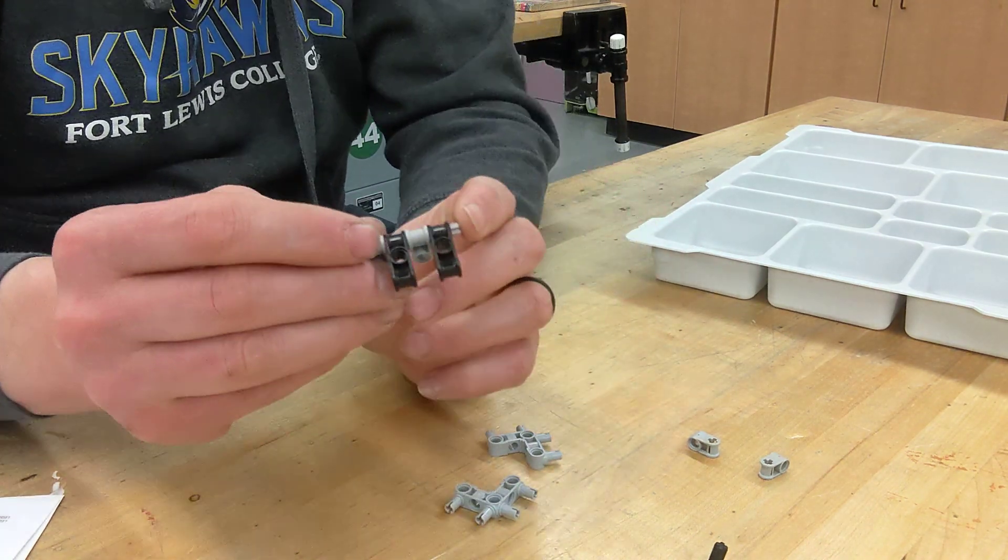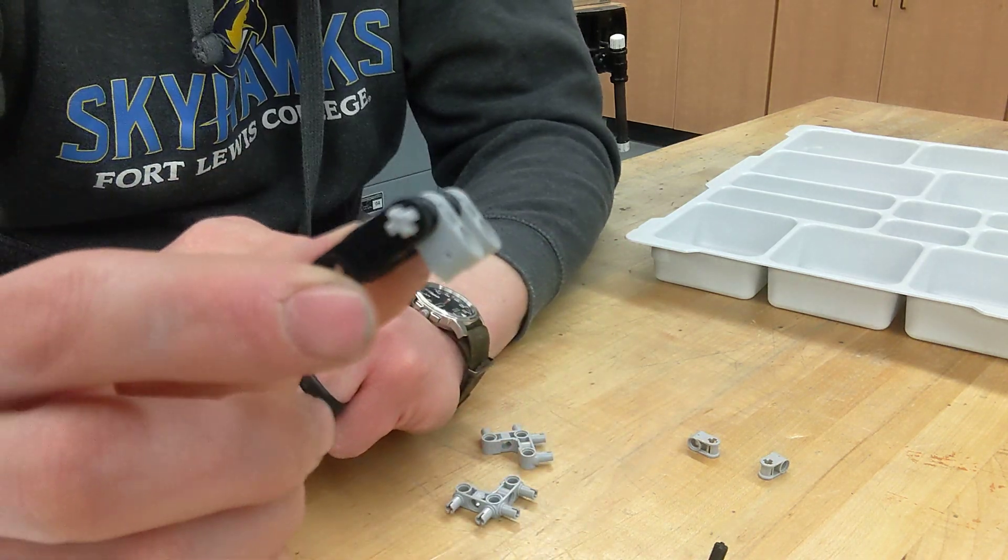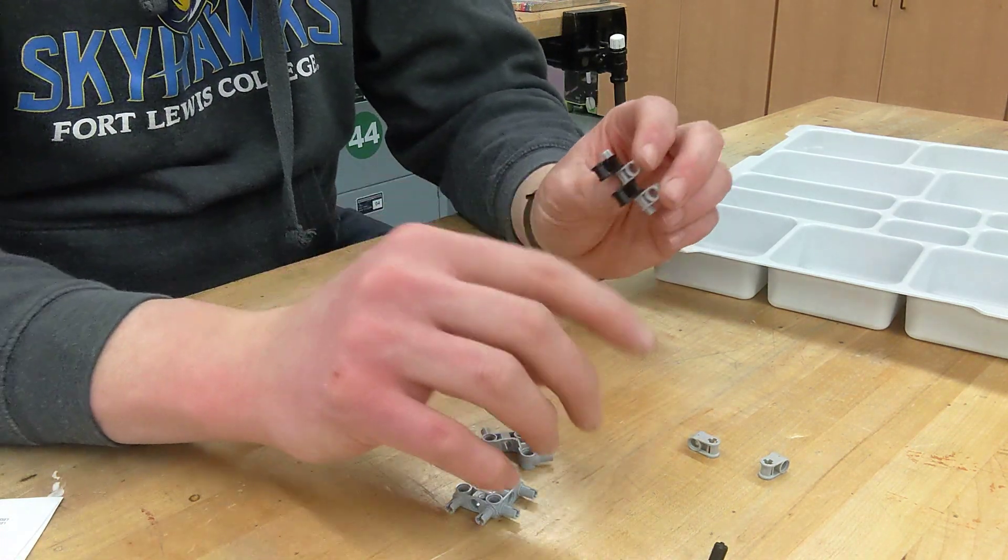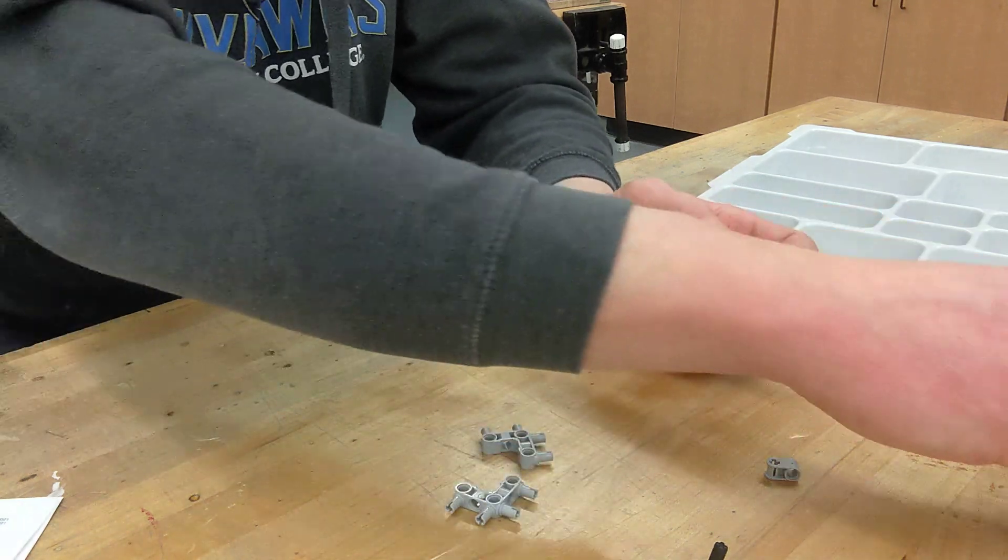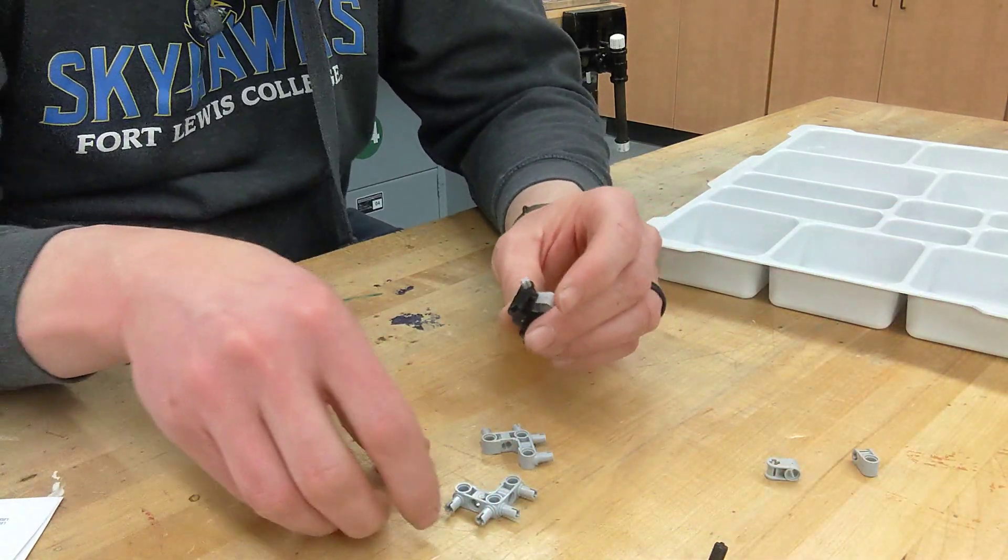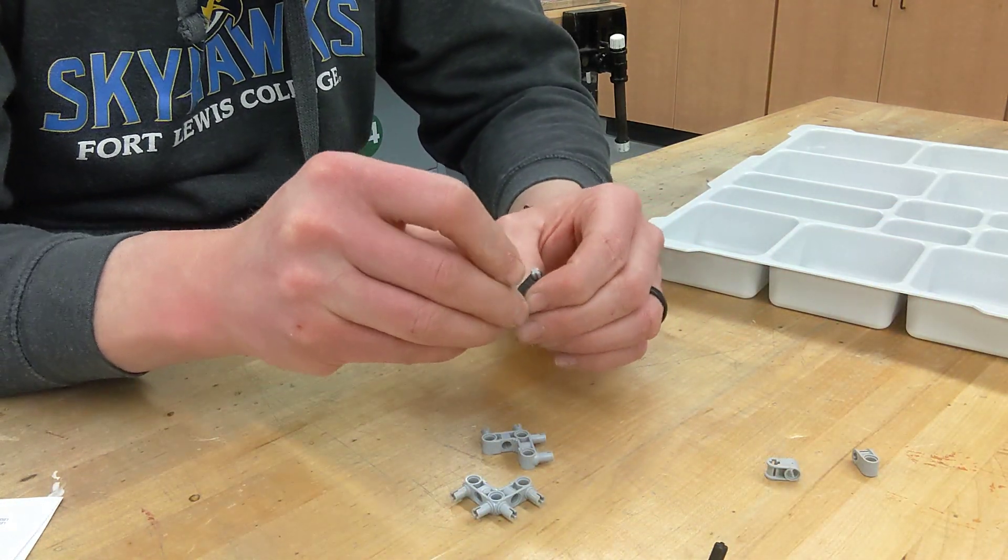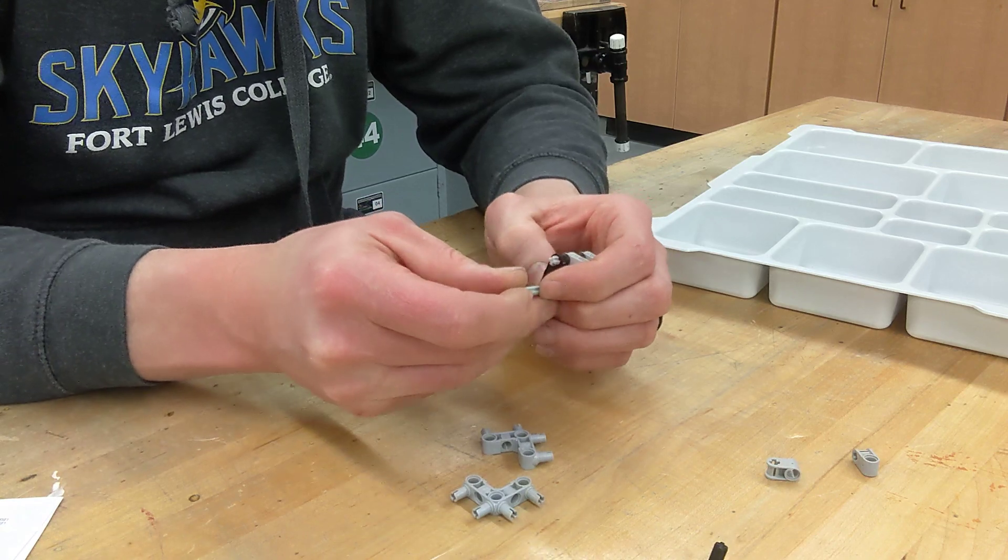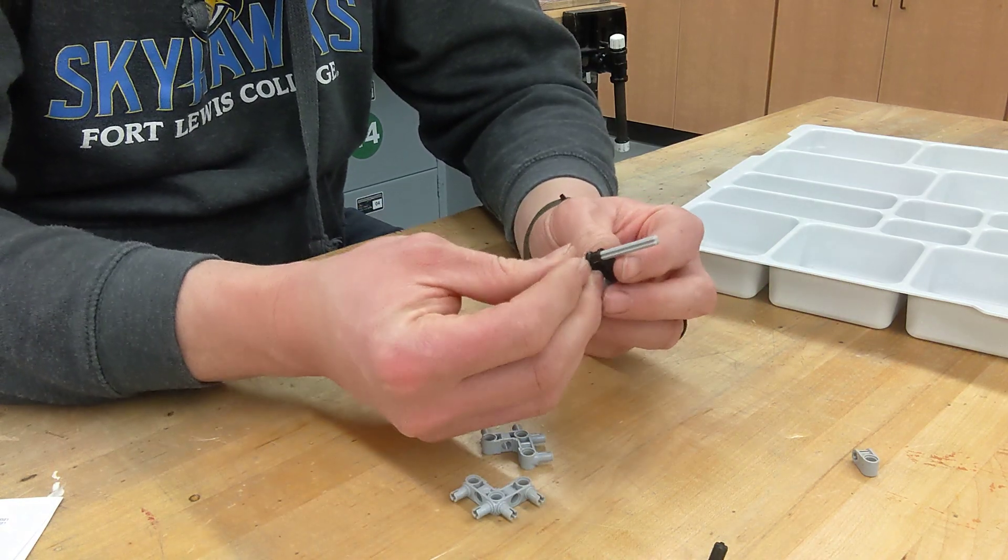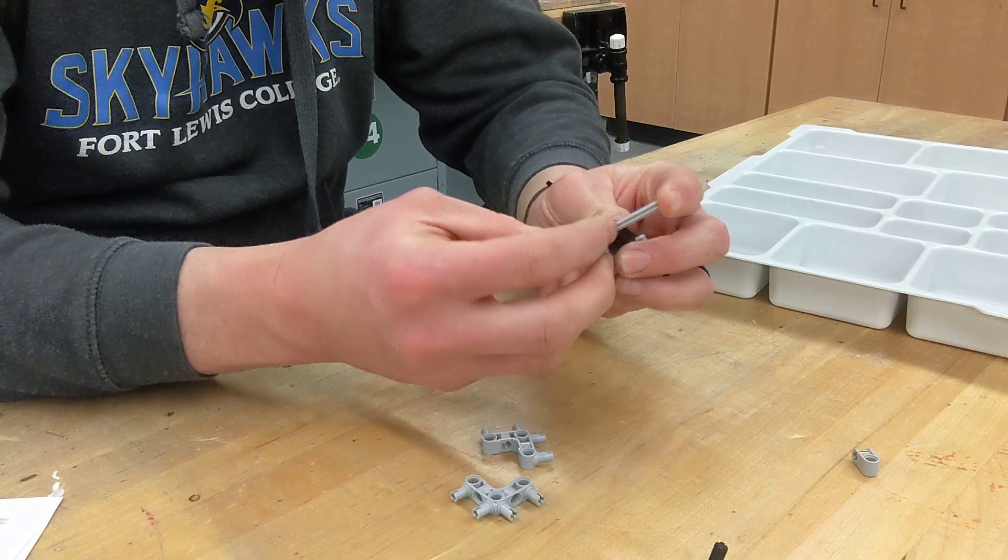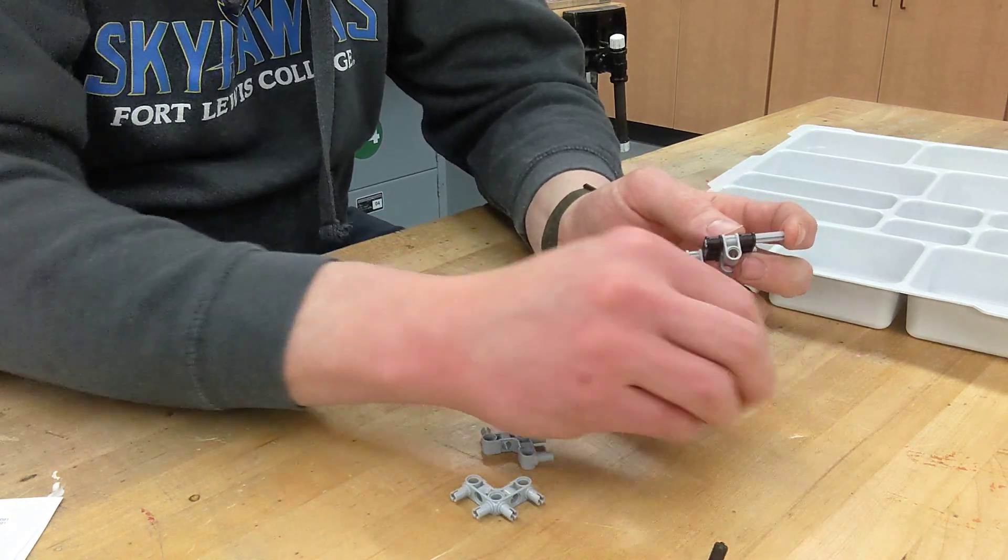And so you're going to get your axle, and these are going to be alternating. So you're going to have two that are going down and then two that are going to go across, right? So we're going to just slide that all together.